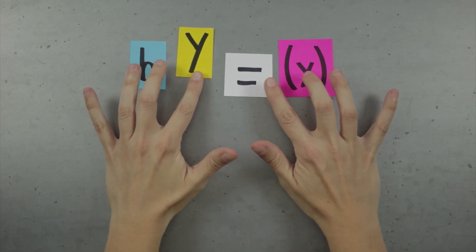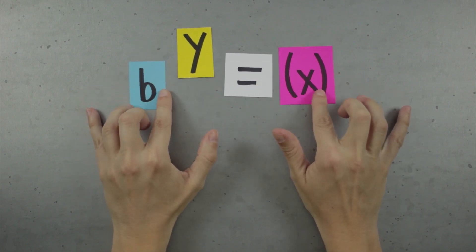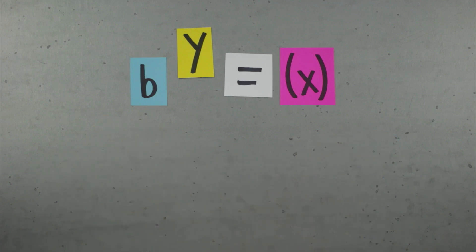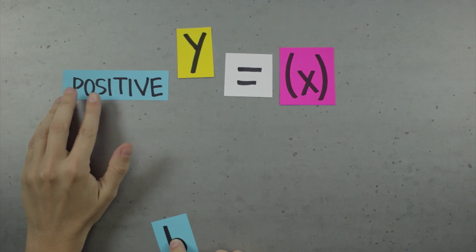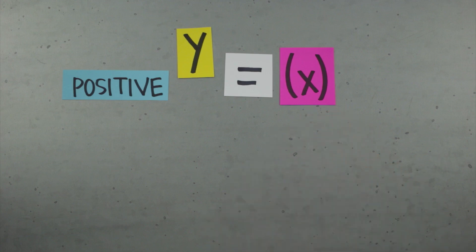So the question is, why does what we allow for the base of the logarithm affect what we can allow for the argument? Because we just said we only allow for positive bases, and we know those bases are going into the equation b to the y is equal to x for b. Which means we're always going to have a positive number for b. What we're trying to figure out is why x always has to be a positive number also.